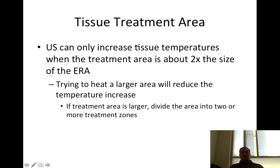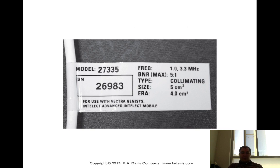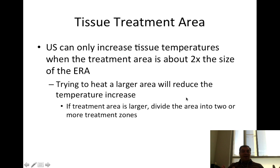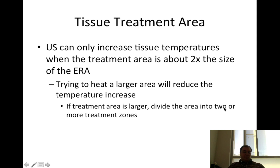Ultrasound can only increase tissue temperatures when the treatment area is about two times the size of the ERA — the effective radiating area. So if the ERA is 4 centimeters squared, you can only cover about 8 centimeters squared, two times the ERA. Trying to heat a larger area would reduce the temperature increase. If the treatment area is larger, divide it into two or more treatment zones.